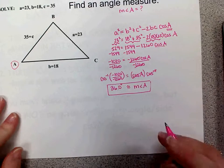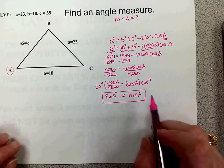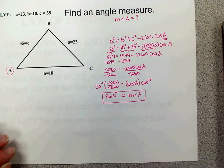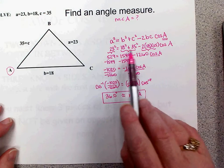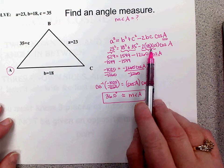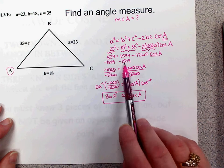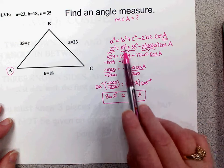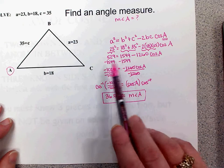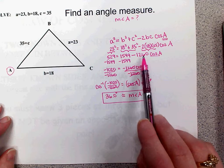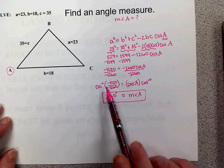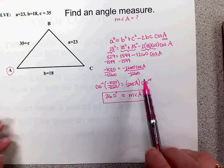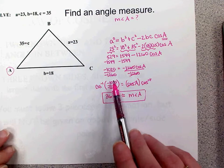Solving for an angle is more involved than solving for a side. When solving for a side you can enter everything in the calculator at once, but for an angle: separate the computation into three parts, subtract that constant term away, divide to undo the multiplication and keep it as a fraction, then take the inverse cosine of that fraction. That gives you your angle measure.